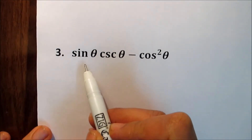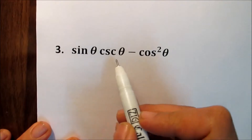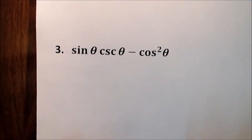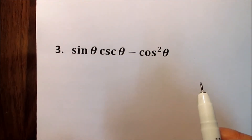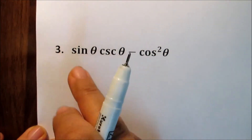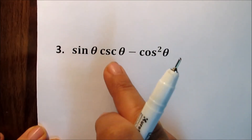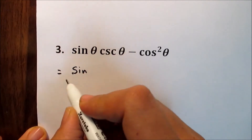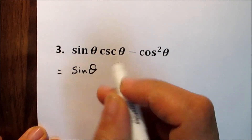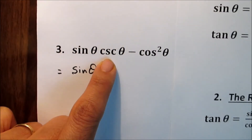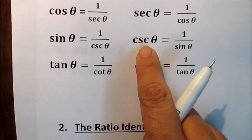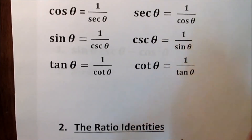Number 3: sine theta times cosecant theta minus cosine squared theta. The easiest way to simplify an identity is to change all functions into sine and cosine. Keep the sine and cosine, and change cosecant using the reciprocal identities — cosecant theta is 1 over sine theta.